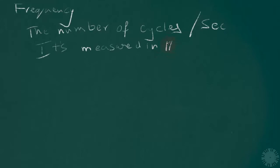Hertz, spelled H-E-R-T-Z, is the unit of measurement of the frequency of waves. In short, we write it as Hz. The number of cycles that the wave completes every second is what frequency is, and we measure it in Hertz.